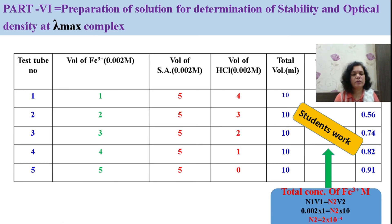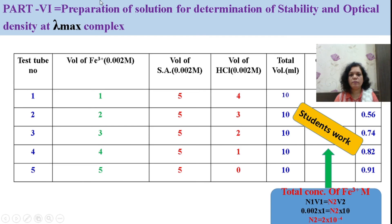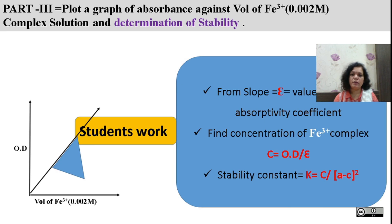To find out the stability constant of the iron-salicylic acid complex, prepare solutions with variation of 1 to 5 ml of iron, keeping salicylic acid volume constant, and adding HCl to make a final volume of 10 ml. Find out the concentration of Fe3+ in each case — it is 0.02 molar initially — applying the dilution equation. At the maximum absorbing wavelength of 500 nm, measure the optical density. These concentration and optical density values will be used to calculate the stability constant of the complex.